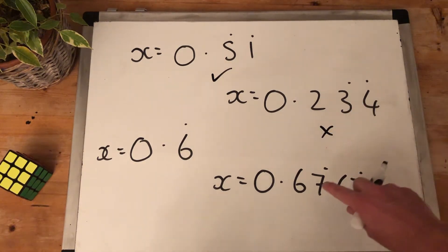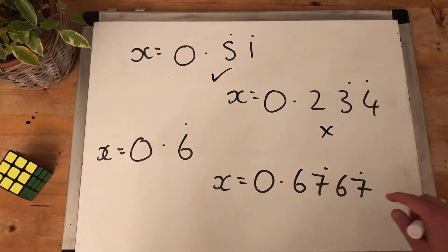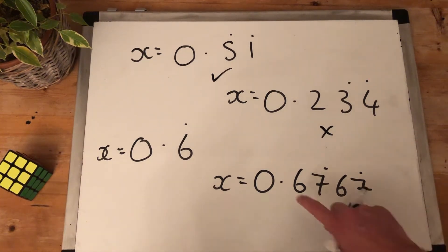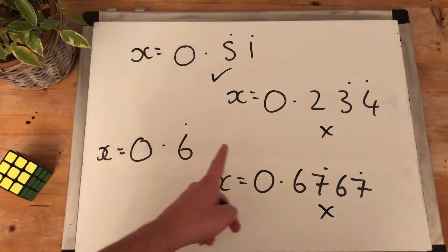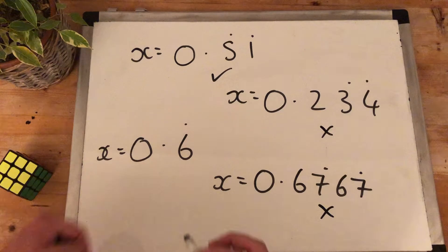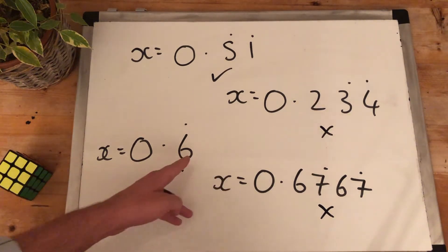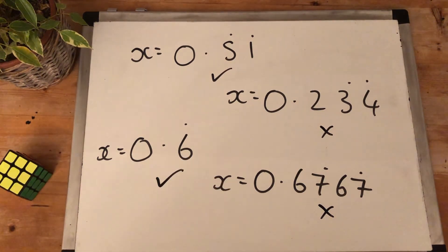0.6767, 767, 767 - well, the 767 recurs, but the six doesn't, so we can't solve this one yet. 0.666666 - yeah, everything after the decimal point recurs, so we can solve it.